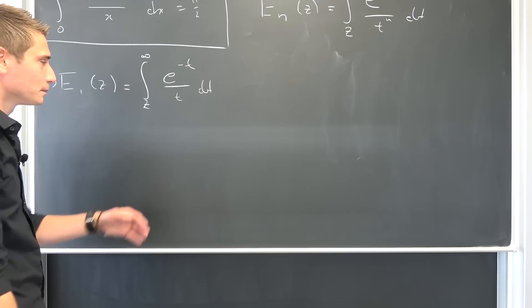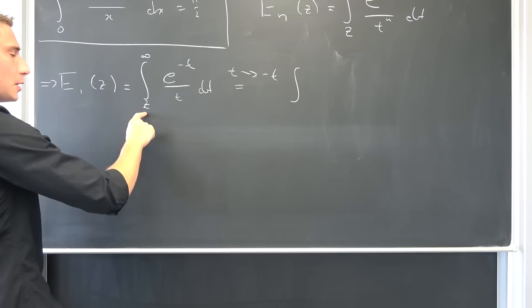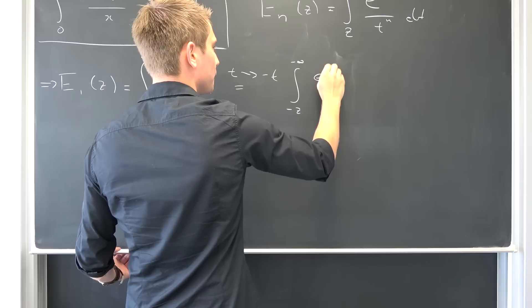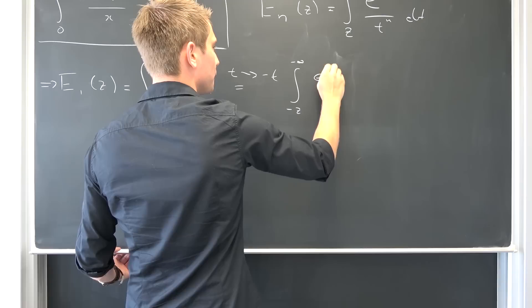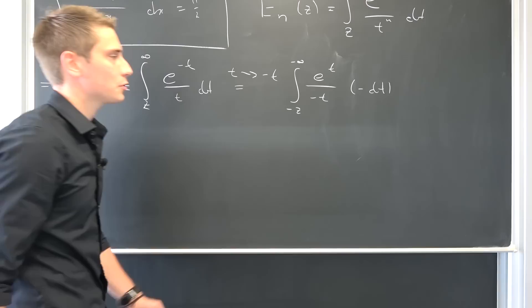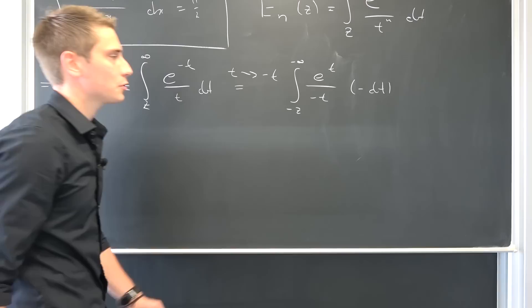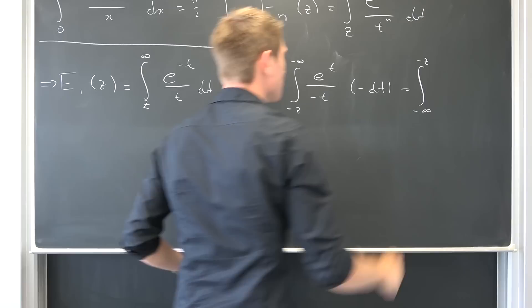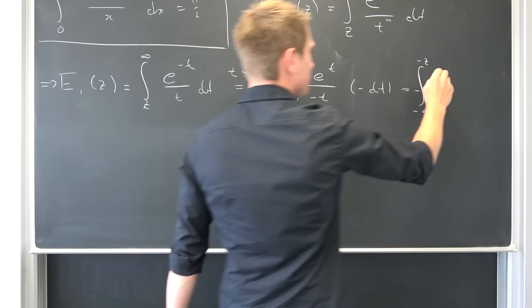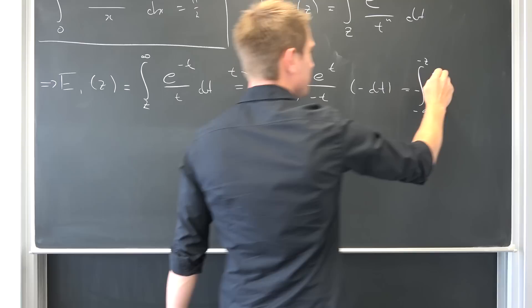Now doing a little transformation, introducing a substitution — we would like to transform t to negative t. Simple substitution, changing upper and lower bounds respectively: from negative z to negative infinity of e to the t over negative t, integrated with respect to negative dt. We can distribute one negative sign into the upper and lower bounds to change the order. Integral from negative infinity to negative z.